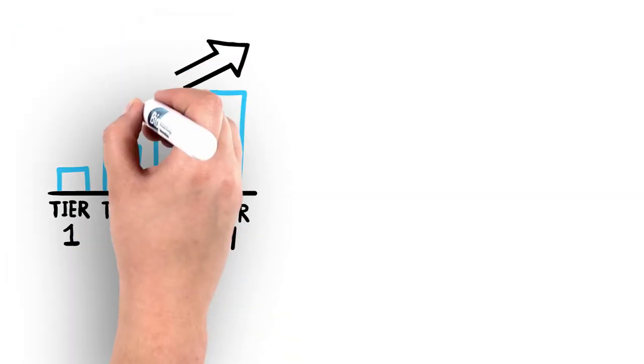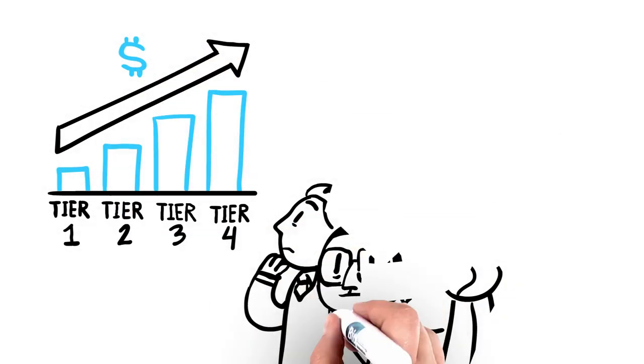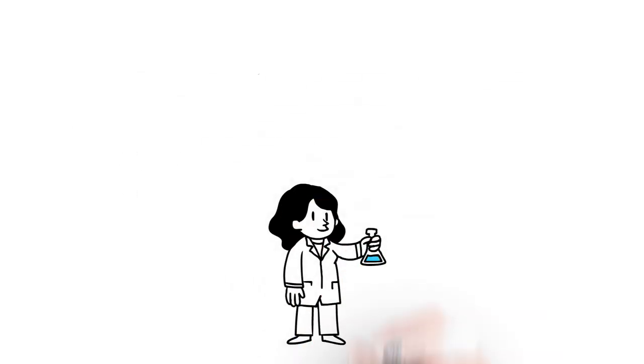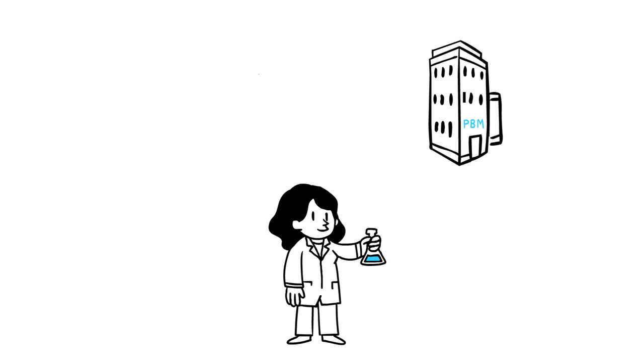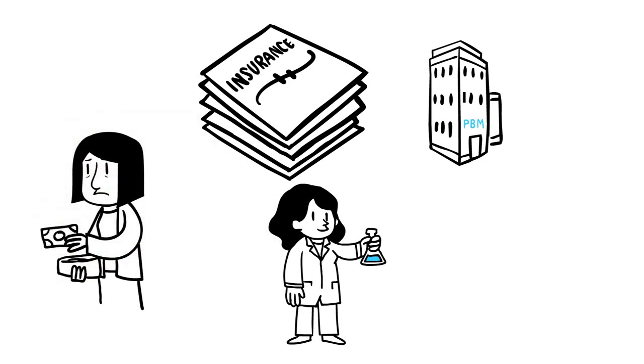And as insurance plans place more medicines on higher cost-sharing tiers, more patients like Joni will feel the pain of higher out-of-pocket costs. Is this how insurance is supposed to work? When we talk about prescription drug costs, we need to consider all of the factors that determine what patients pay and how changes to the way insurance is designed are shifting a greater share of the burden onto vulnerable patients like Joni.